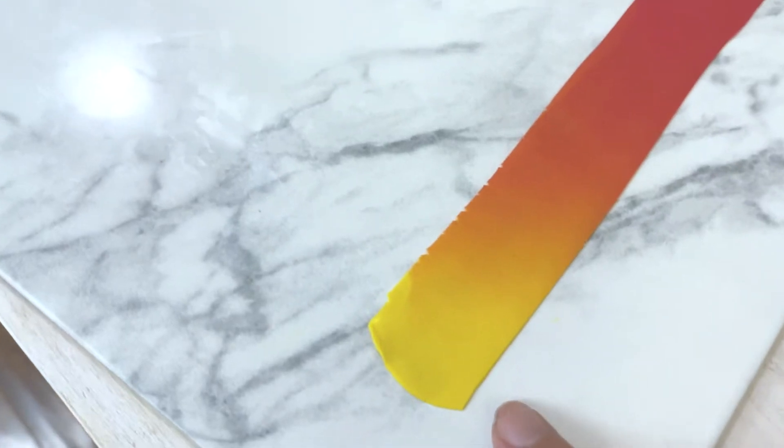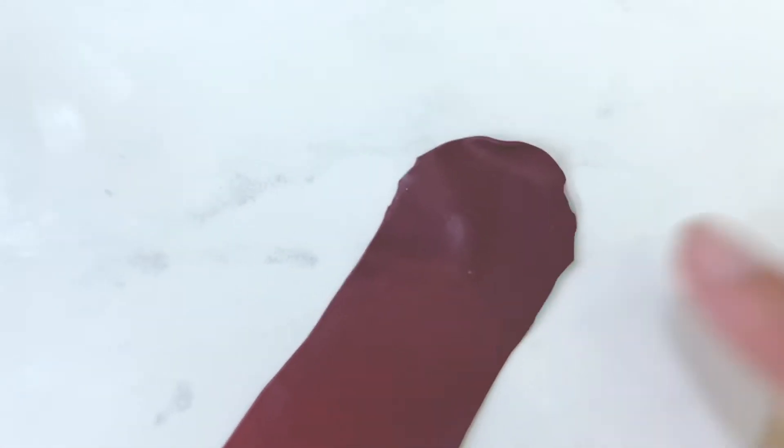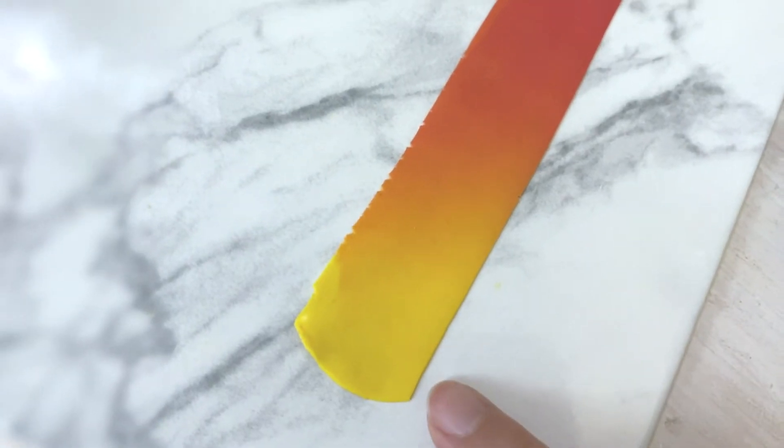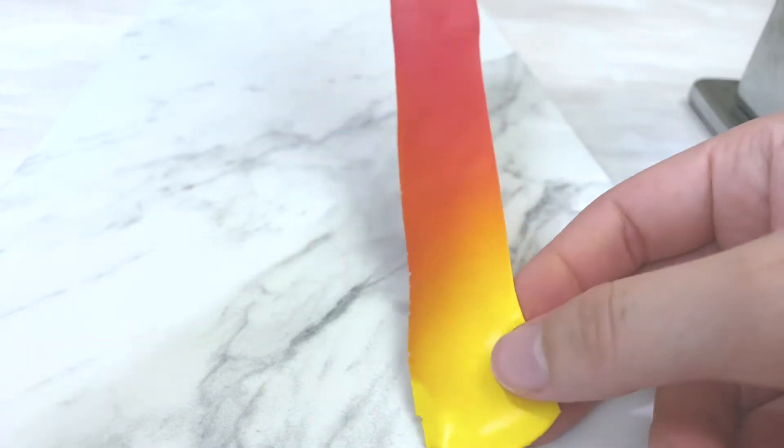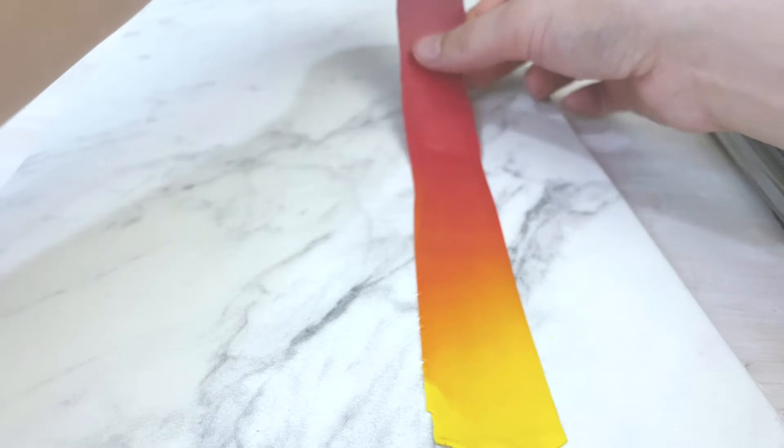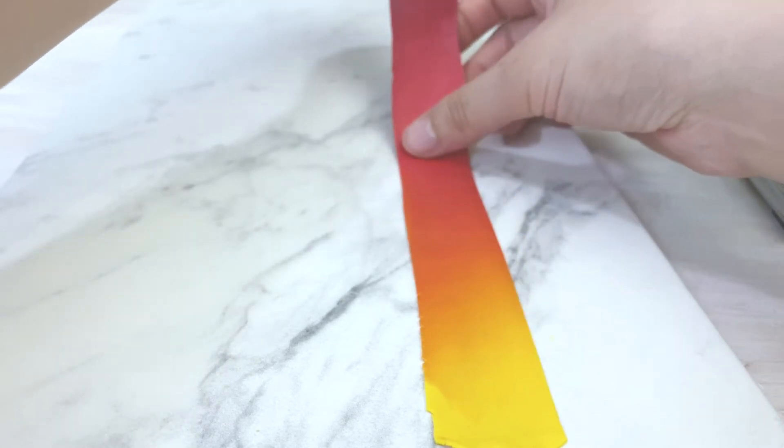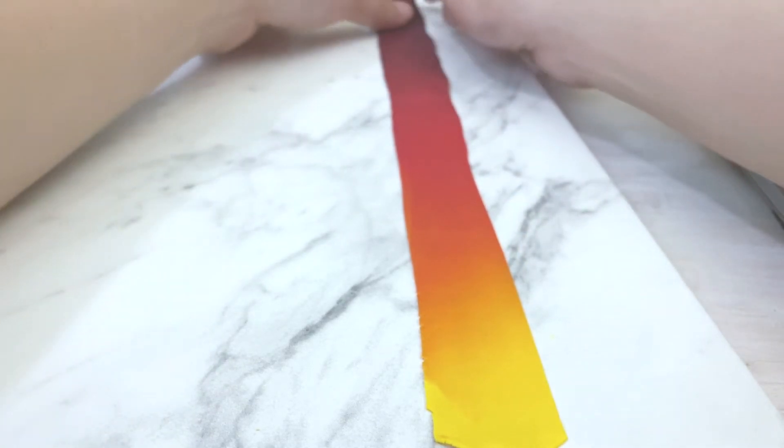Creating canes. To create a simple cane, decide on what color you'd like to start off at the center. For example, I start off with the center being yellow and I'll gradate to mauve. Also make sure you place your sheet on the surface as straight as possible which will make the rolling process more even.